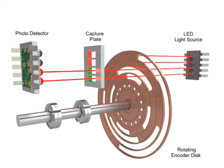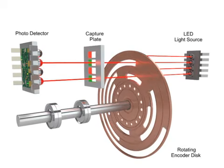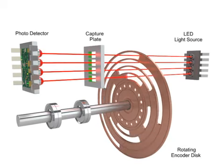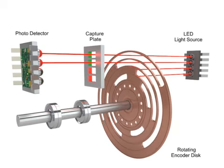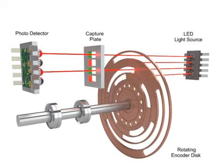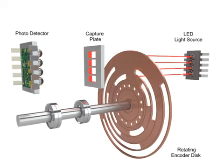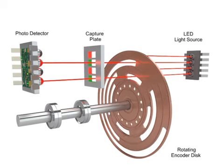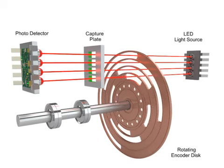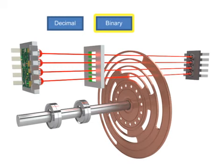The received light provides a four-bit word that indicates the position of the actuator or device the encoder is mounted to. The most common types of numerical encoding are decimal, binary, and gray code.